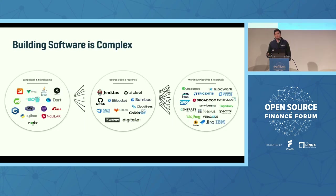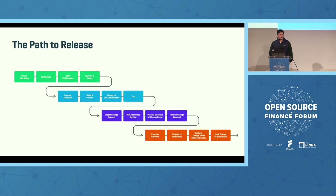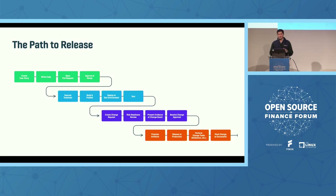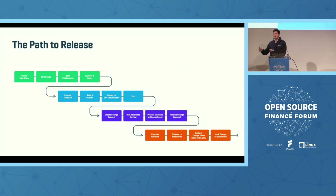Building software is complex, and at a regulated institution that's amplified. You have a bunch of different runtimes, build platforms, tool chains, and release environments. Being able to capture all of the requisite metadata sufficient for a software change can be pretty tricky. When we talk about automated governance in this presentation, I'm going to focus on this specific part — the path to release — covering everything from creating a user story, writing code, executing your tool chain, creating your change request, doing validation tasks, and providing traceability of all those events when auditors come calling.